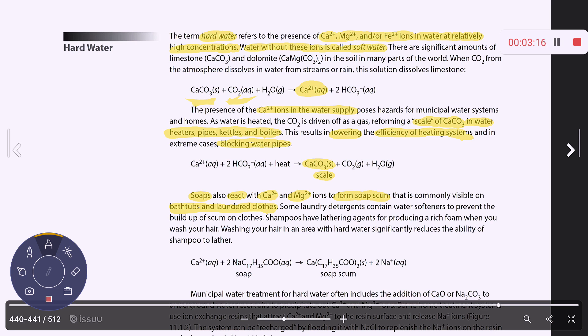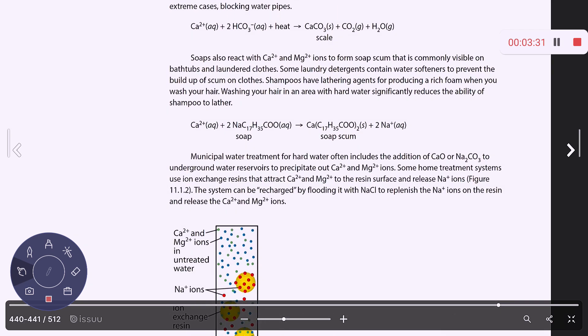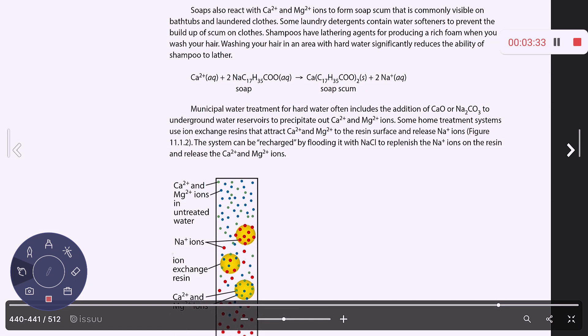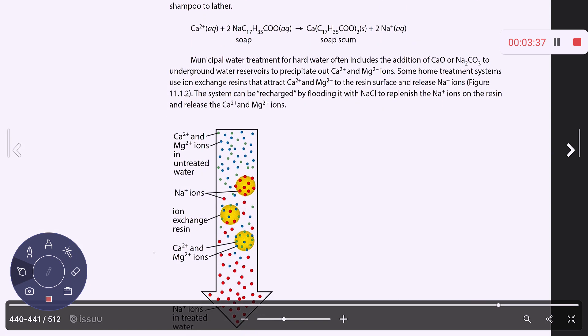It also has an effect on the shampoo that you use. So if you wash your hair with hard water, you're going to notice that you're probably going to use a lot more shampoo than you would normally because you can't get it to lather. And then some water treatment plants will add things to try and precipitate out the calcium and magnesium ions.